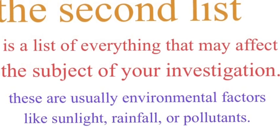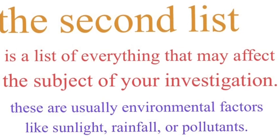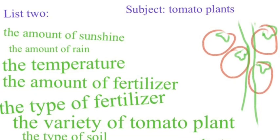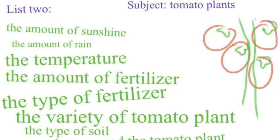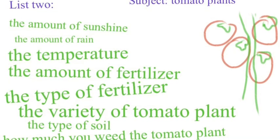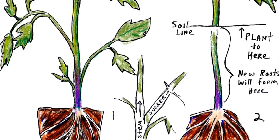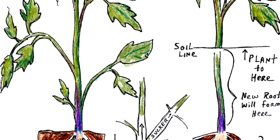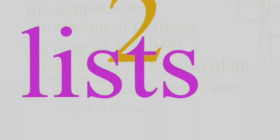The second list is everything that might affect the subject of our investigation. In this case, again, it's the tomato plant — all the things that might affect it: how much sunshine it gets, how much rain it gets, how much compost is put on it, the type of soil, the amount of weeds you pull, or even the type of tomato plant you start with. Notice you're choosing what you're changing here — so these are all possible independent variables. You've got the environment list, which we call the independent variable, and the dependent variable list, which is really just the subject itself.